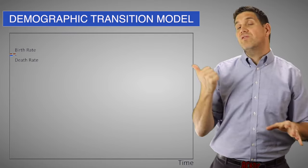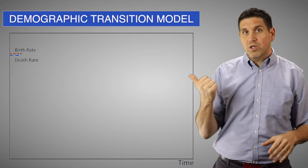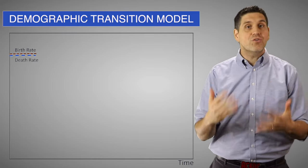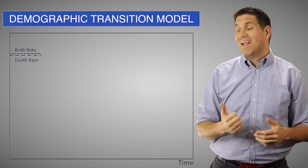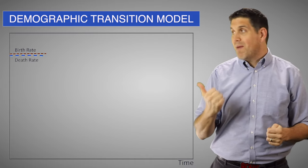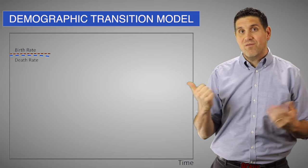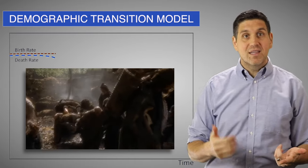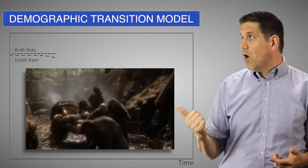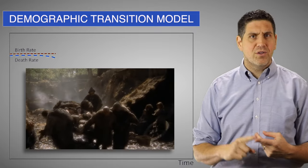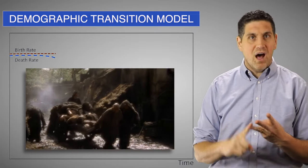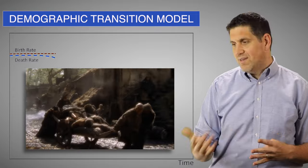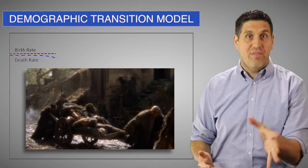For thousands of years, the world looked like this. There were high birth rates with families having many children, but high death rates with many of those children never reaching adulthood. Life expectancy and living standards were low, there were no hospitals or medicine, and life was basically hunger, disease, war, and death. A lot of death.